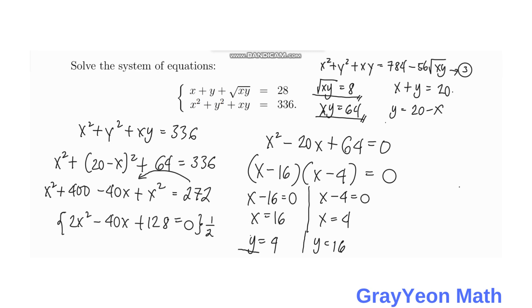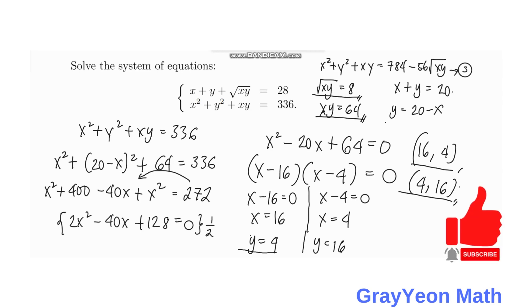So these are our answers. The pairs are (16, 4) and (4, 16) — those are our final answers. Thank you for watching until the end of the video. Please like the video if you enjoyed our solution, and don't forget to subscribe to the channel and hit the bell icon so you'll be updated for more math videos like this.